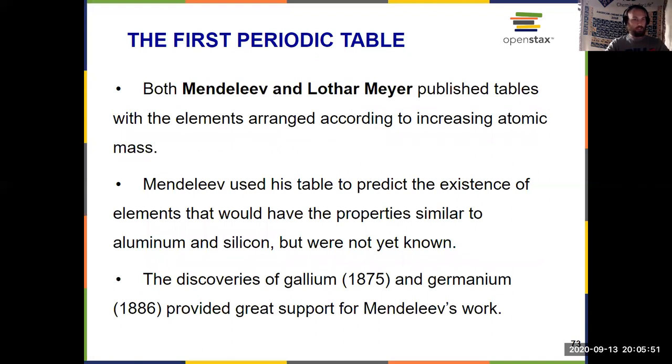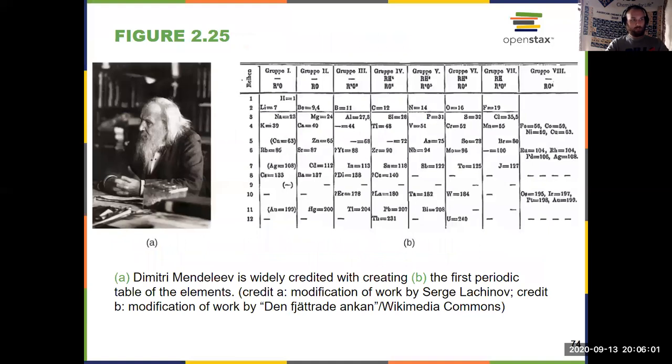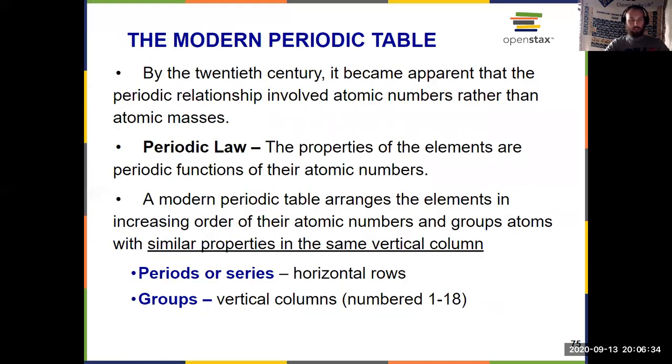Mendeleev used his table to predict other elements, like gallium and germanium. This is what Mendeleev looks like, heck of a beard, and that is what his original periodic table looks like over there on the right-hand side. A little bit different than the modern one we have today. They originally thought this trend was due to atomic mass, but it's actually due to atomic number. Reactivity is controlled by the number of protons. That controls the chemical identity, as we've alluded to in previous videos. So we've evolved to having this modern periodic table, and now we'll talk about what information this can give to us.